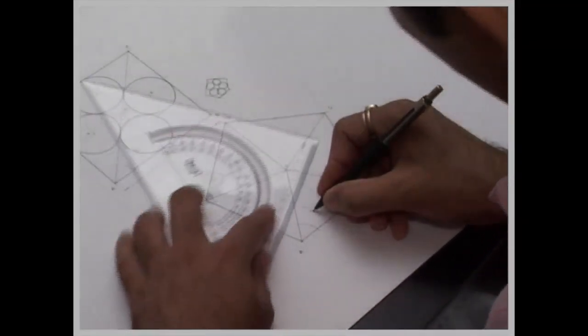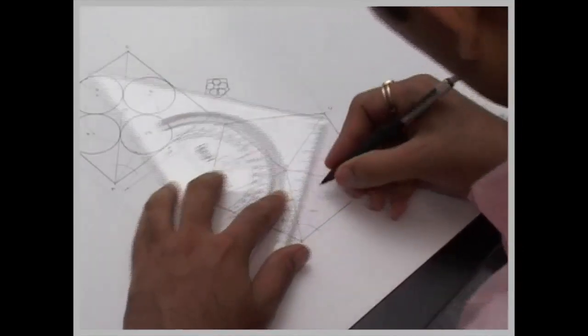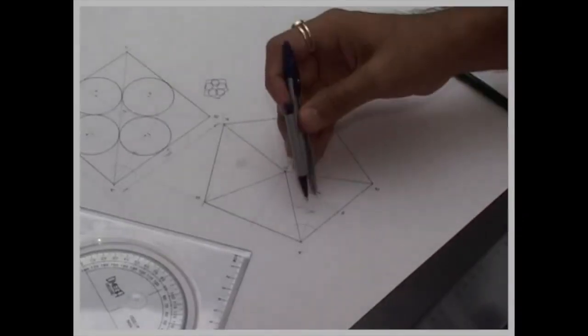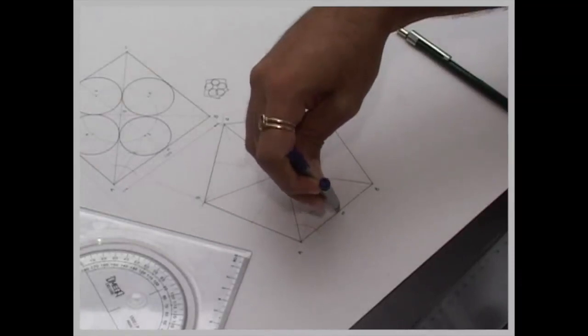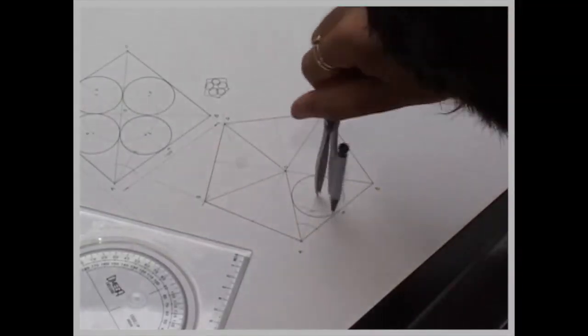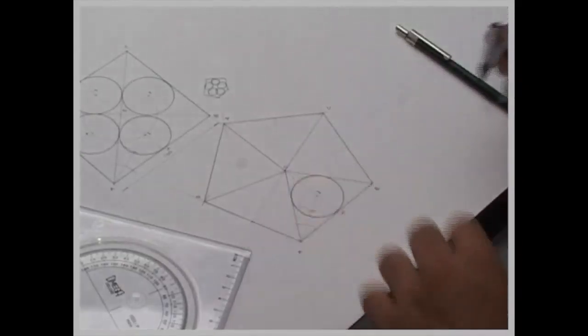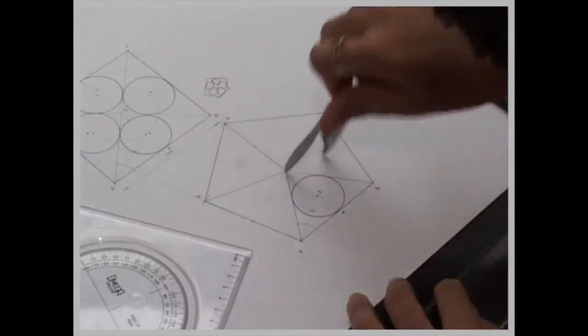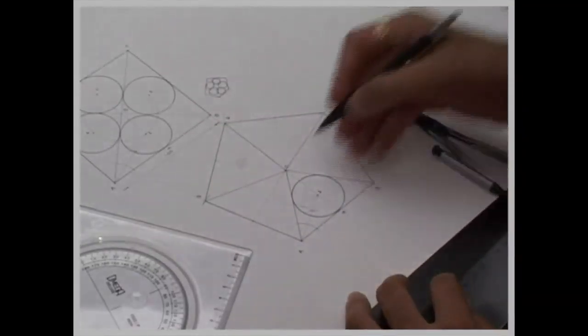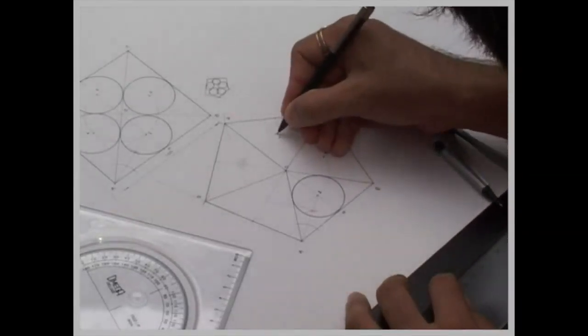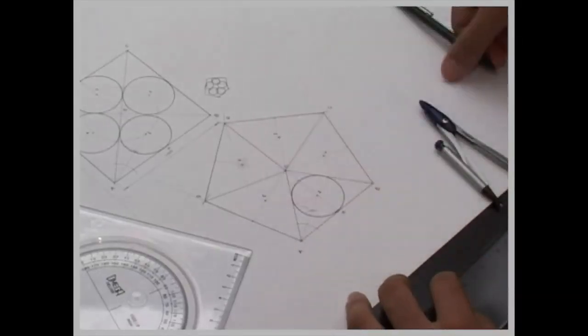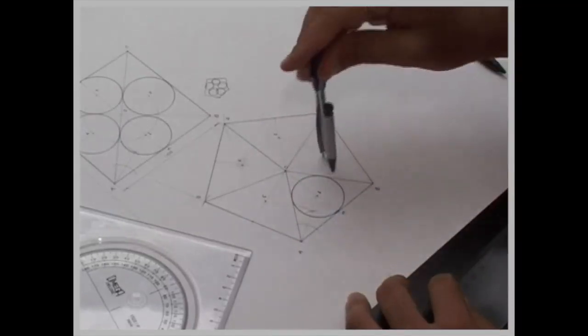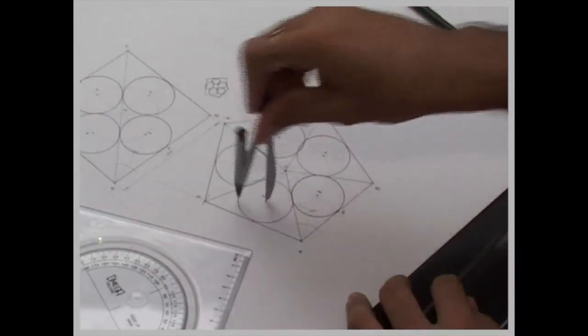Now we will bisect angle OAB. Wherever it will cut from that point, we will take a center. We will take the radius equals to 1 to N and draw a circle. Then again we will take O to 1 as radius and draw another circle. Wherever it will cut here, that is 0.2, 0.3, 0.4, 0.5. Now, same method. We will take the same radius 1 to N and draw at points 2, 3, 4, and 5.